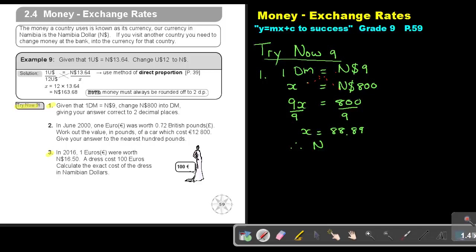So therefore, let's just look at that unit, that this is going to be 88.89 Deutschmark. That will be my answer.